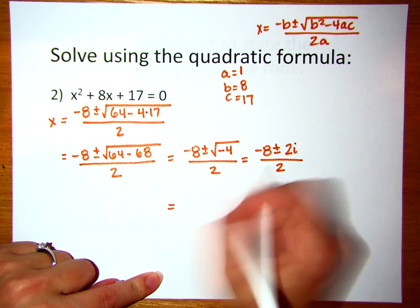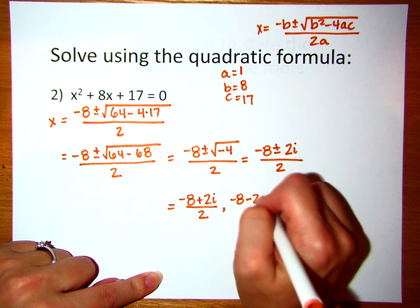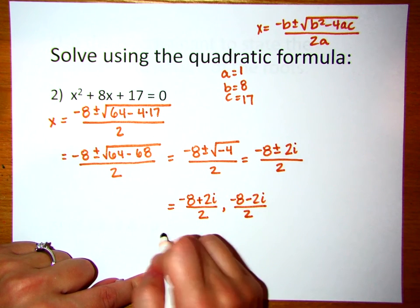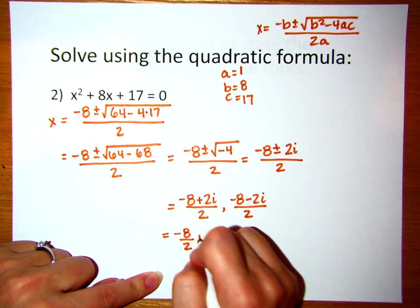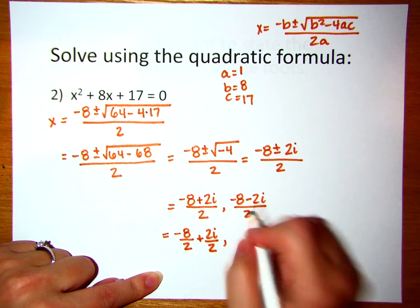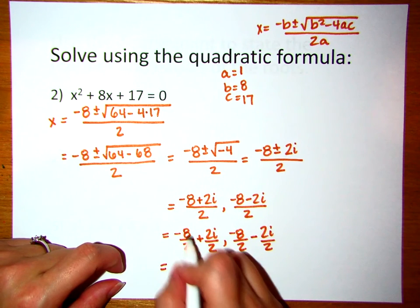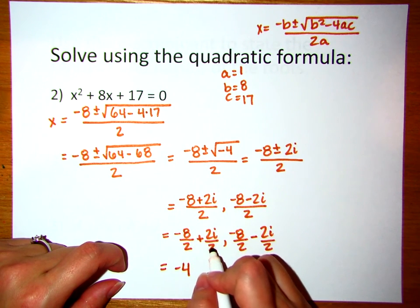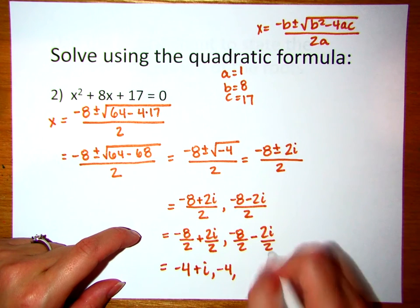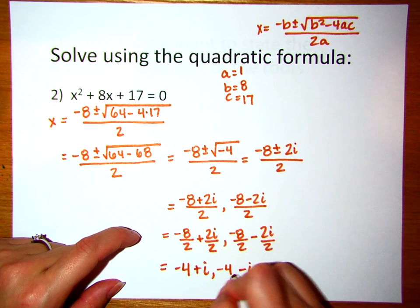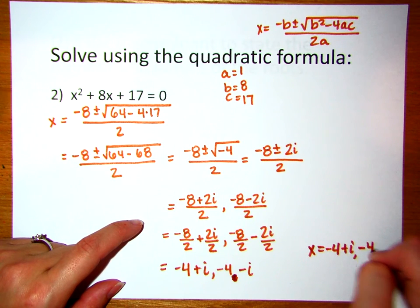Now we're ready to break this into two problems: negative 8 plus 2i divided by 2, as well as negative 8 minus 2i divided by 2. We're going to break this off because the denominator is a monomial, so that means negative 8 divided by 2 plus 2i divided by 2, and this one would be negative 8 divided by 2 minus 2i divided by 2. Cleaning up: negative 8 divided by 2 is negative 4, and 2i divided by 2 is just i. Negative 8 divided by 2 is negative 4, and negative 2i divided by 2 is negative i. So the two answers are x equals negative 4 plus i, and negative 4 minus i.